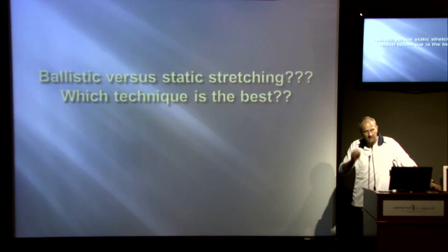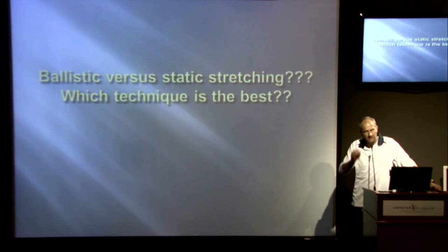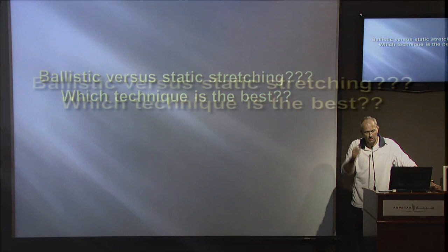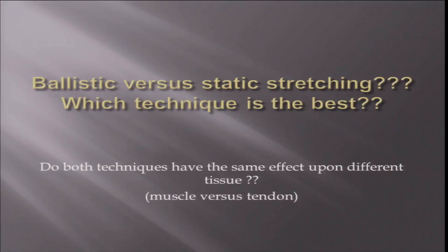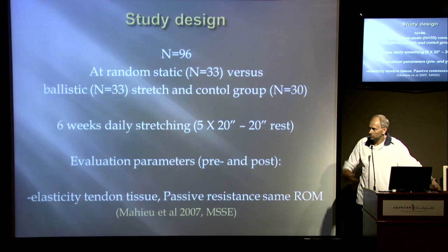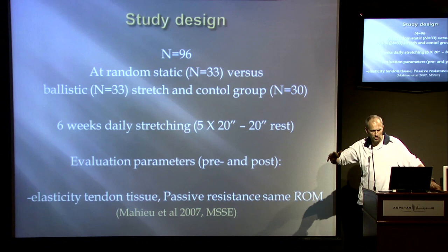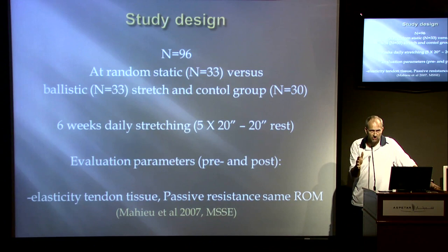So this is what we did, and this is what I will try to explain to you. The question is: what is happening in the muscle itself, which tissue are we trying to change, and which technique is the best? The study design we used took about 100 patients, divided into three groups: one ballistic stretching group, one static stretching group, and one control group.